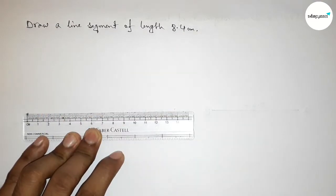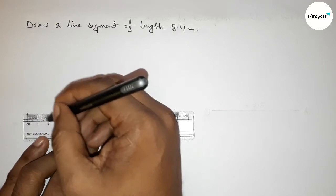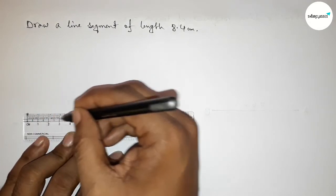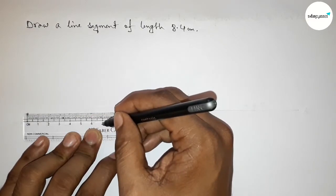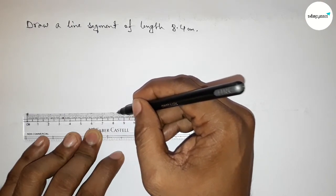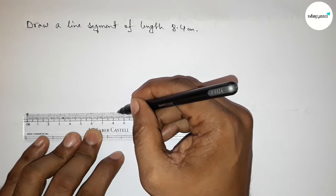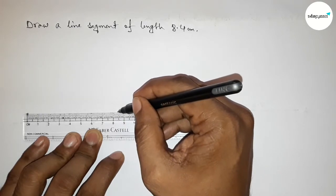First marking here the starting zero, then counting: this is zero, one, two, three, four, five, six, seven, eight. So this is eight, eight point one, two, three, four. So this is eight point four centimeter length.